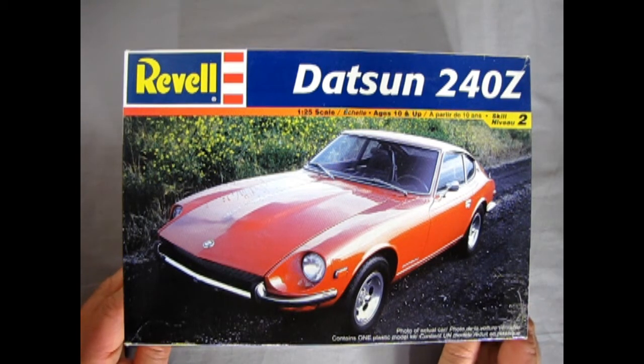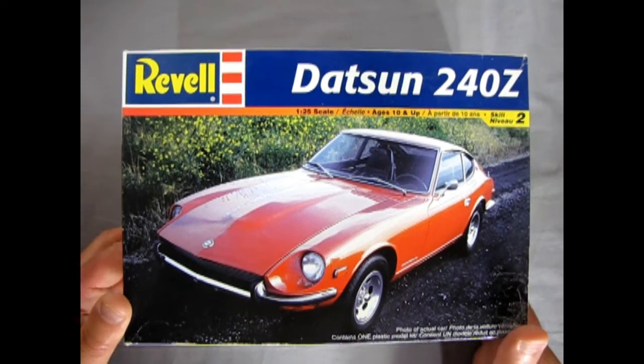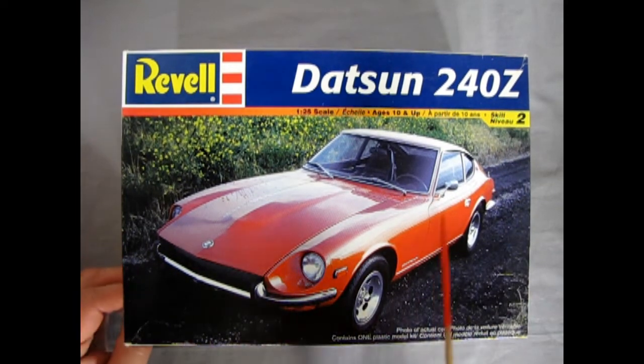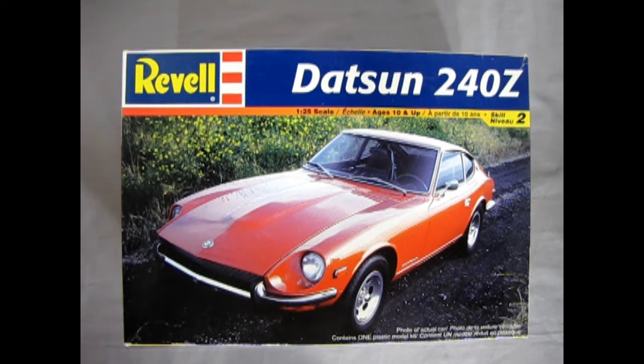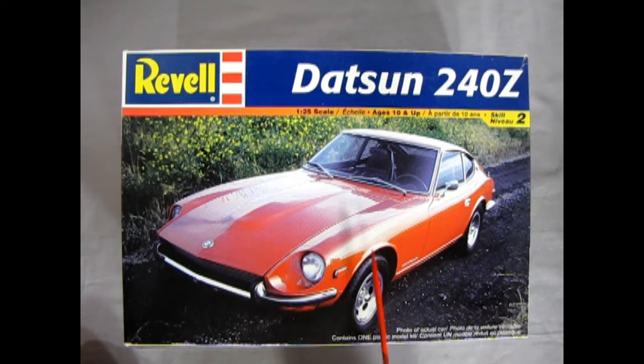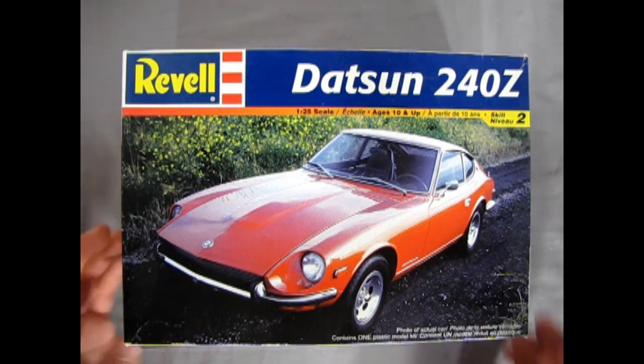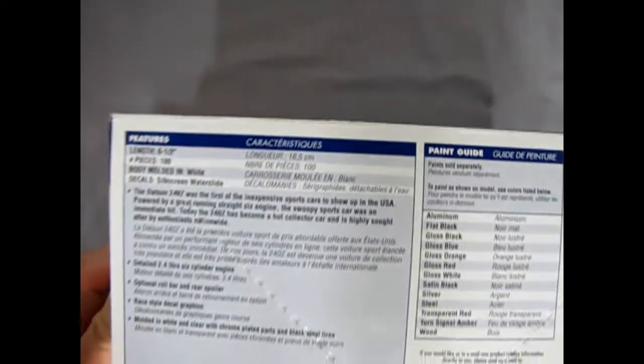Looking at this great model kit from Revell, we can see a photo of the real car. It's interesting to note that this kit came out in 1971 as the initial release in stock formation, then later became Pete Brock's Brie Datsun 240Z, and then in 2002 we got the stock version back again. That was a bit lengthy but interesting history.